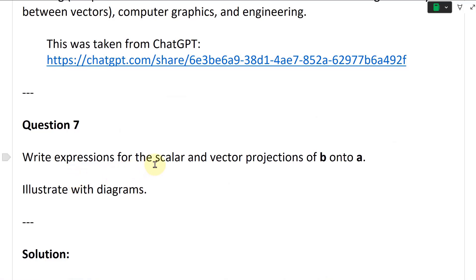Question 7 states: write expressions for the scalar and vector projections of B onto A, illustrated with diagrams.